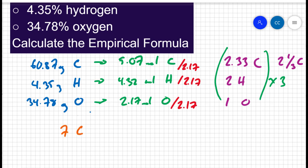I'm going to get 7 carbons, 6 hydrogens, and 3 oxygens. Or I can write this as C7H6O3. And that is the empirical formula for salicylic acid.